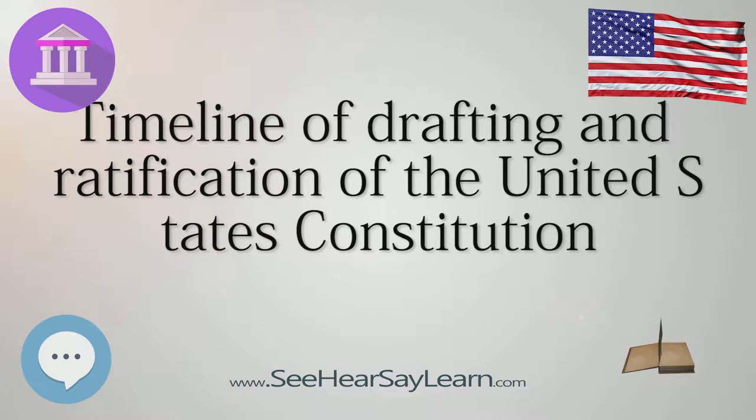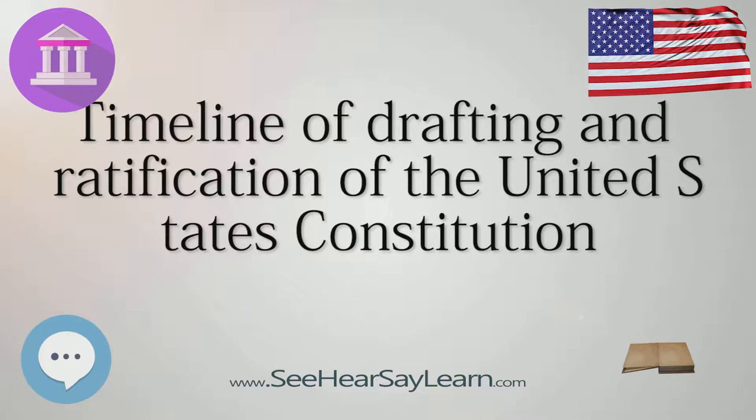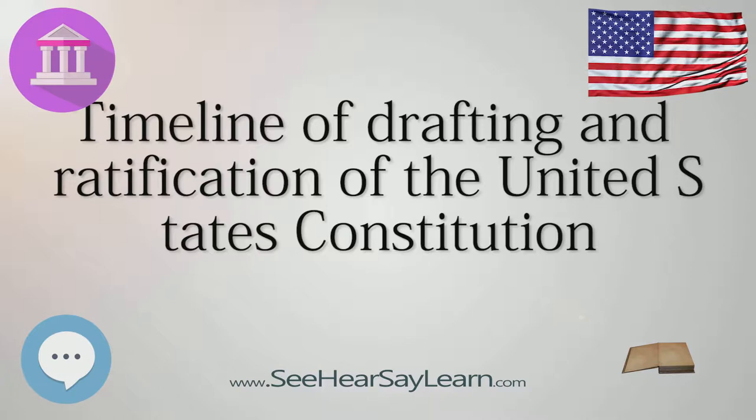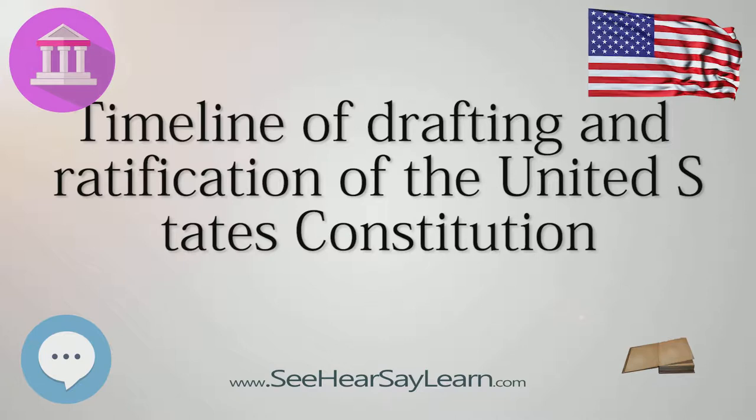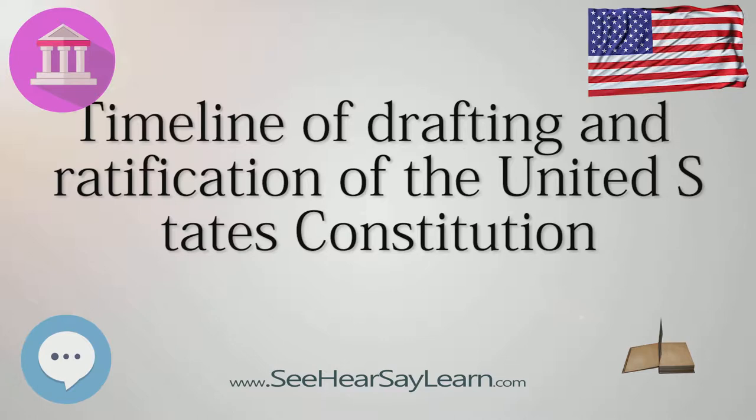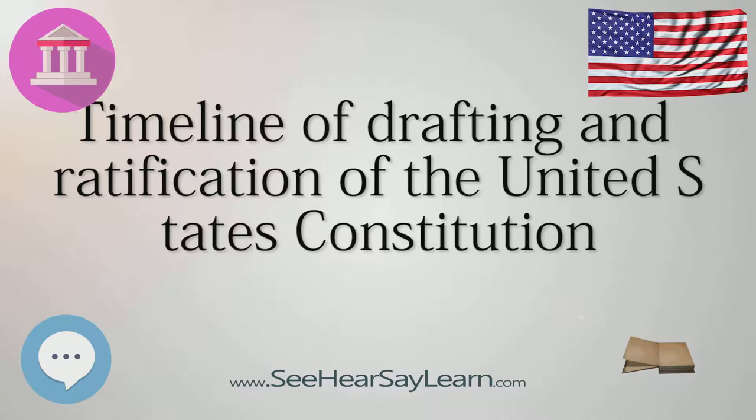The drafting of the Constitution of the United States began on May 25, 1787, when the Constitutional Convention met for the first time with a quorum at the Pennsylvania State House, now Independence Hall, in Philadelphia, Pennsylvania, to revise the Articles of Confederation, and ended on September 17, 1787, the day the Constitution drafted by the Convention's delegates to replace the Articles was adopted and signed.